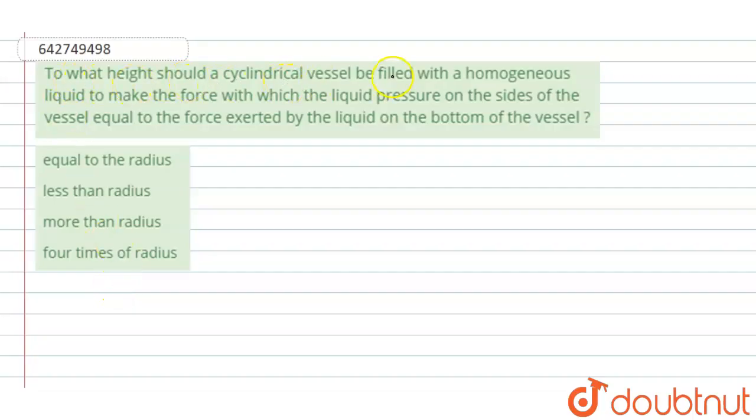To what height should a cylindrical vessel be filled with a homogeneous liquid to make the force with which the liquid pressure on the sides of the vessel equal to the force exerted by the liquid on the bottom of the vessel?